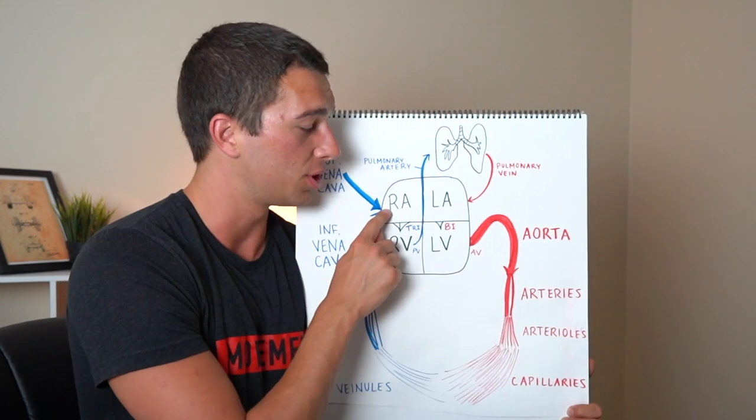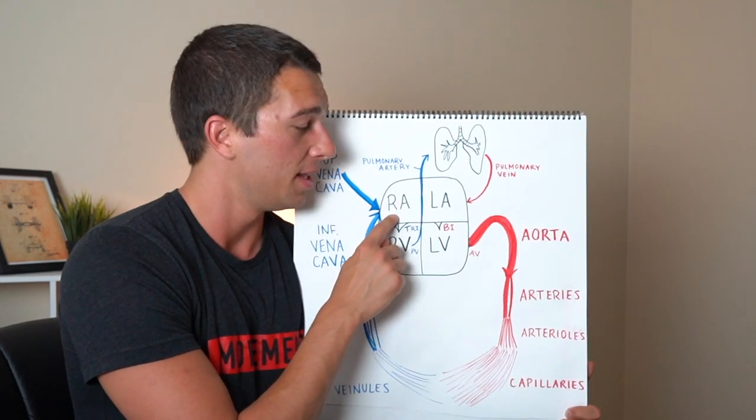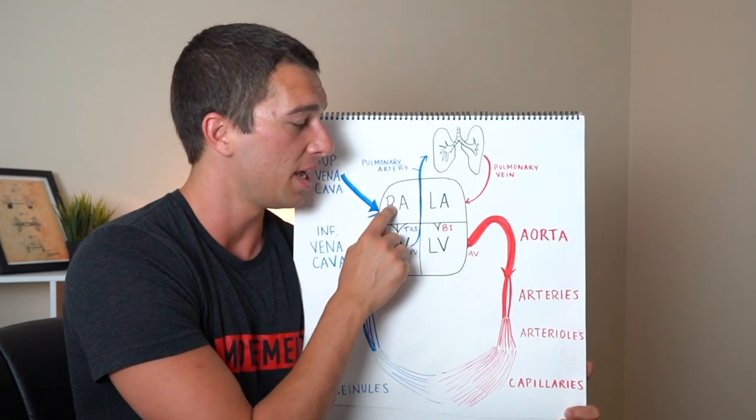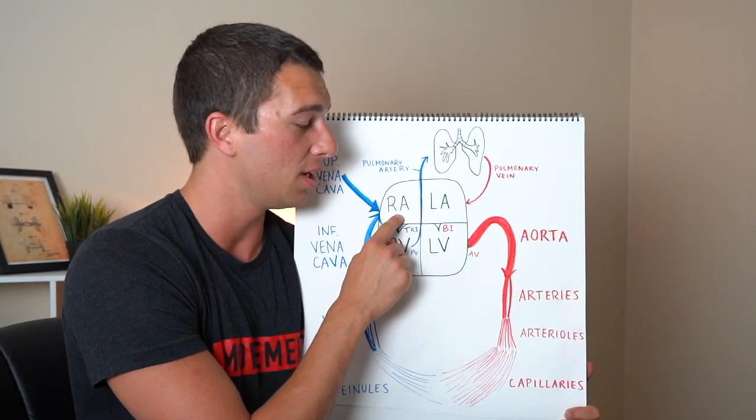So in terms of blood flow we're going to start up here at the right atria. This is deoxygenated blood that came from the veins and as it gets into the right atria it's then going to be pumped down through the tricuspid valve.